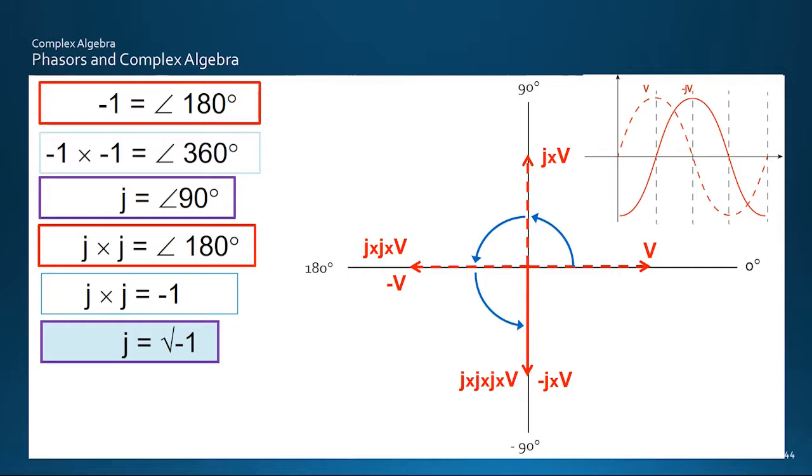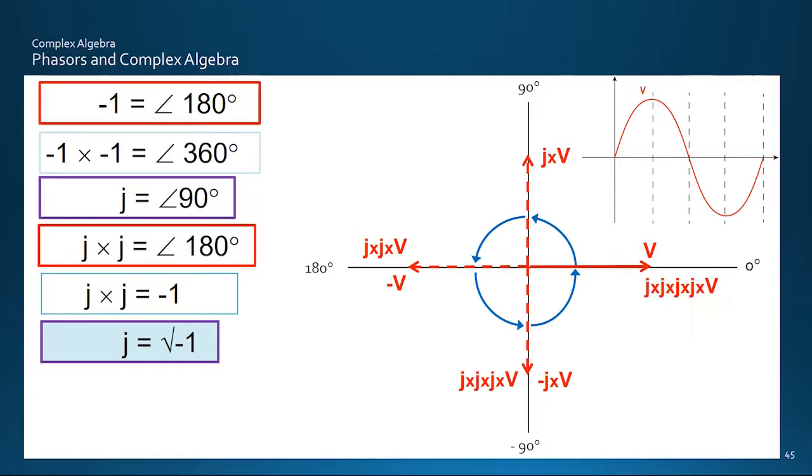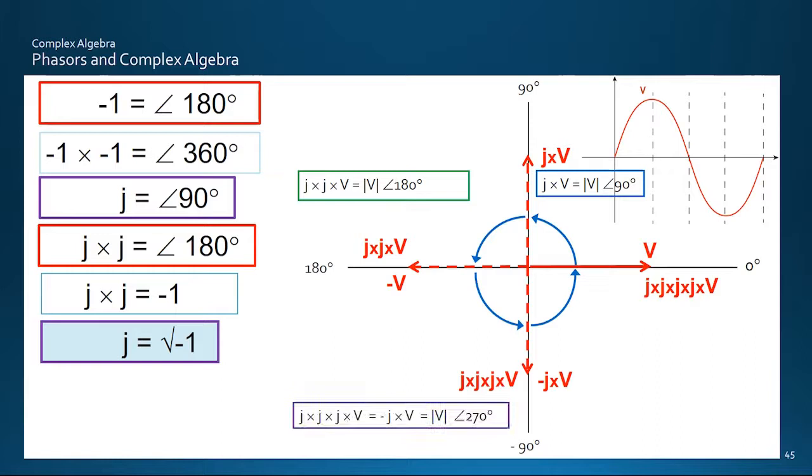Finally, multiplying by J yet again brings us back to the start point, with J times J times J times J, or minus one times minus one, or plus one for the full 360 degrees. Now we can say that multiplying any phaser by J is equivalent to swinging it around anticlockwise by 90 degrees in the angle bracket, without changing its magnitude V, shown here in the vertical line brackets, through 180 to 270 and all the way around to 360.